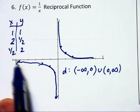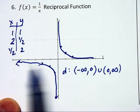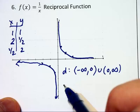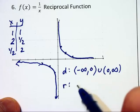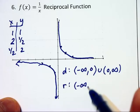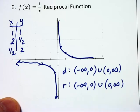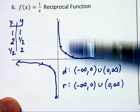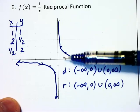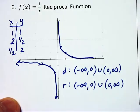So the domain is going to be negative infinity to 0 not included united with 0 to infinity. And that's looking from left to right saying all x values except for 0 can be involved in this problem. And the range will also be negative infinity to 0 union 0 to infinity.